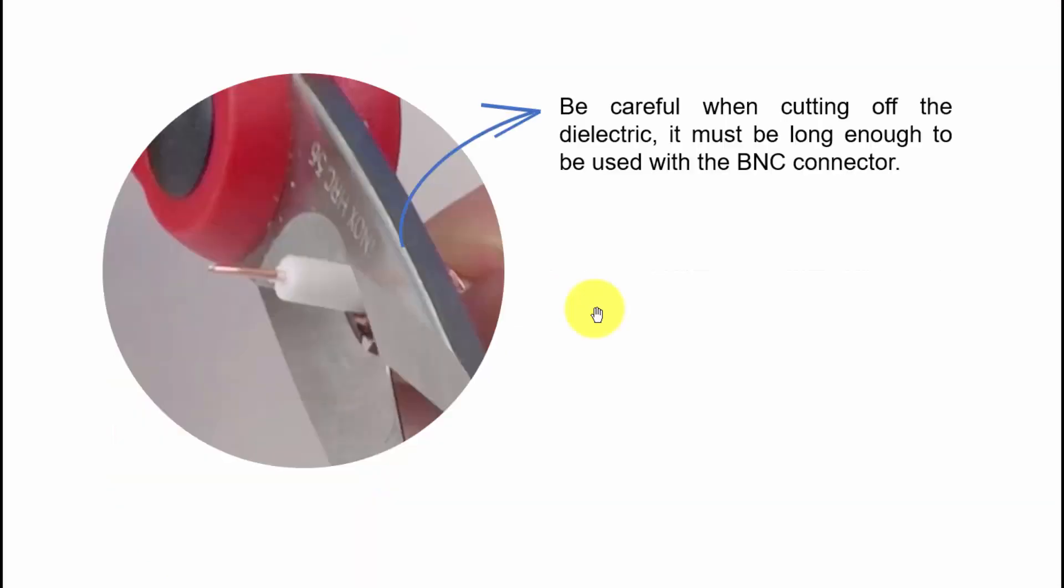You also need to carefully cut part of the dielectric that isolates the central conductor from the braid. But be careful, you need to cut in the right position so you don't cut too much and you have enough dielectric here to separate the braid from the central conductor. Remember, you can't let the braid touch the central conductor.